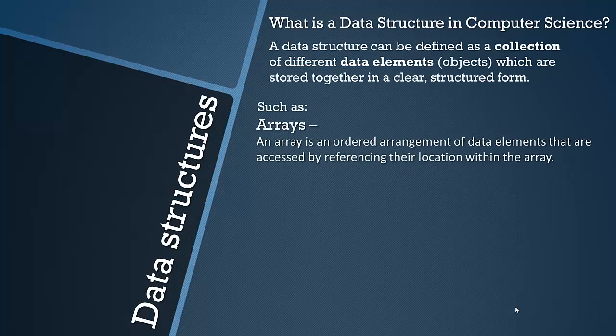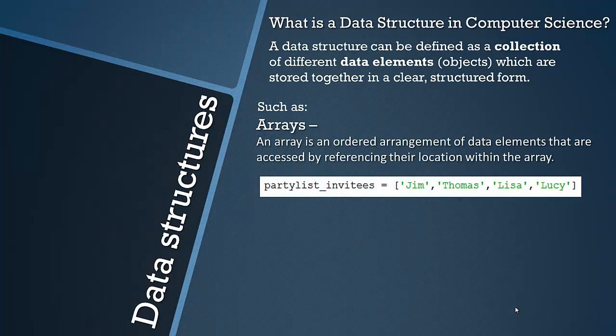So examples of this are arrays, and we looked at this briefly in the last video. They are an ordered arrangement of data elements that are accessed by referencing their location within the array via indexing. If you don't know what that is, we looked at it in the last video. It's important to note that in Python, arrays are technically lists. There is a difference between lists and arrays, but they're essentially the same on the surface. So you can refer to it as an array, but they're technically lists.